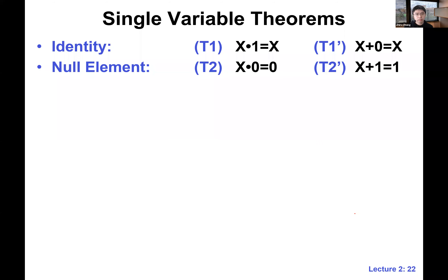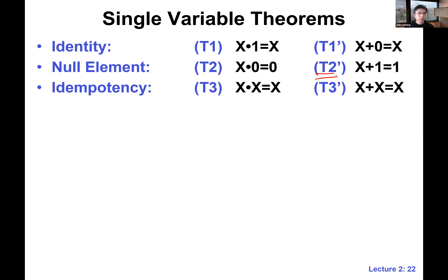Zero is the null element for AND, and one is the null element for OR — x OR 1 is one regardless of what x is. We also have something called idempotency, which we'll use a lot in the next lecture. It means x AND x equals x. No matter how many times you AND the same variable with itself, you get the same variable.